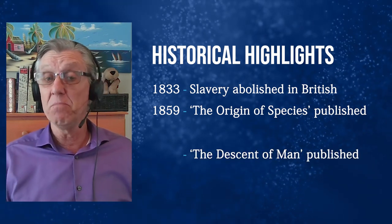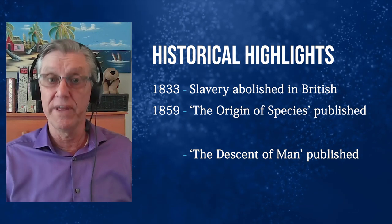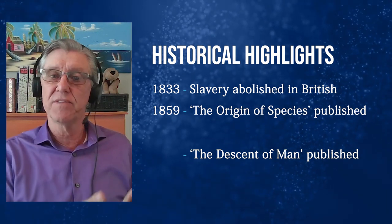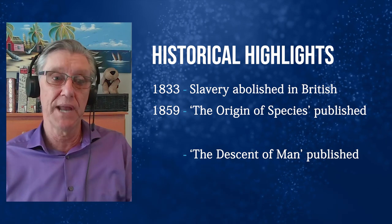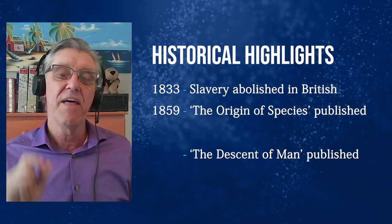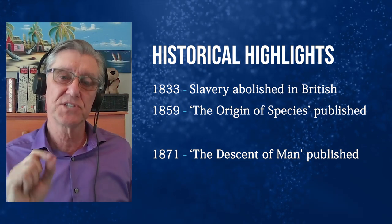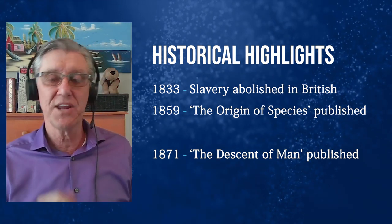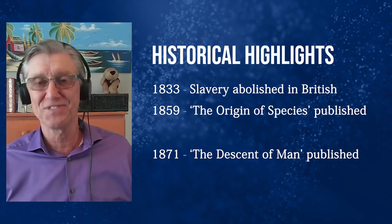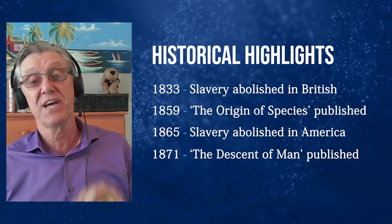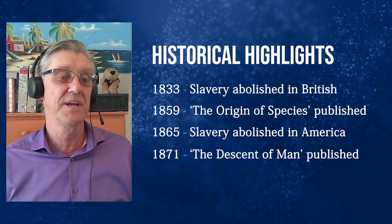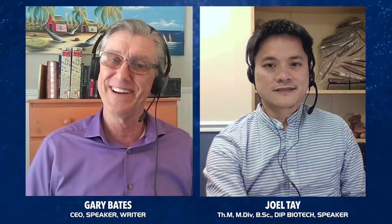In his second book, The Descent of Man, where he really argued for the evolution of man, Darwin postulated that the so-called dark-skinned races were less evolved and closer to the apes. That was published in 1871 — 38 years after the abolition of slavery in the British Empire, and six years after the 13th Amendment in the United States, which abolished slavery. So clearly, slavery was abolished before Darwin had even developed these theses.